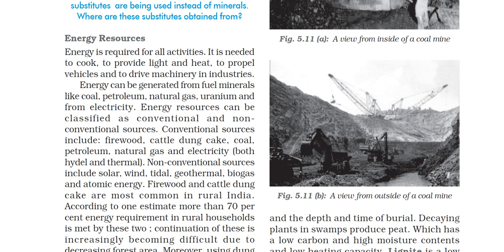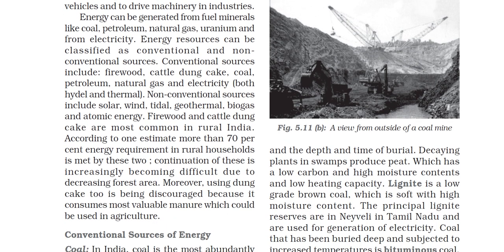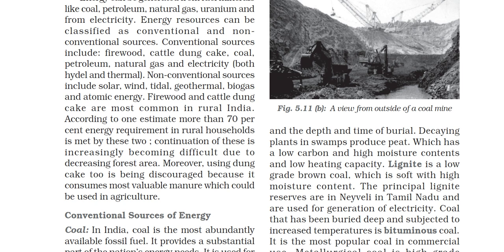Firewood and cattle dung cake are the most common energy sources in rural India, accounting for more than 70% of the energy requirement in rural households. In India, about 70% of rural people still depend on these traditional sources rather than electricity. This is increasingly becoming difficult due to the decrease in forest area.